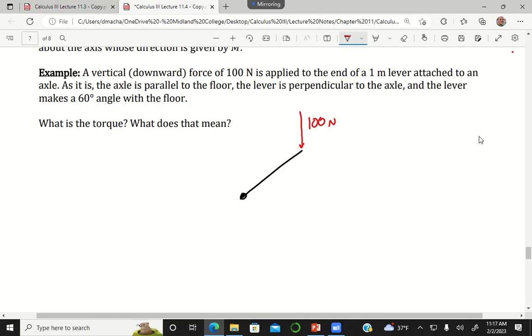A one meter lever which is attached to an axle. Imagine here is the axle. As it is, the axle is parallel to the floor, the lever is perpendicular to the axle - there's a 90 degree angle here - and the lever makes a 60 degree angle with the floor.